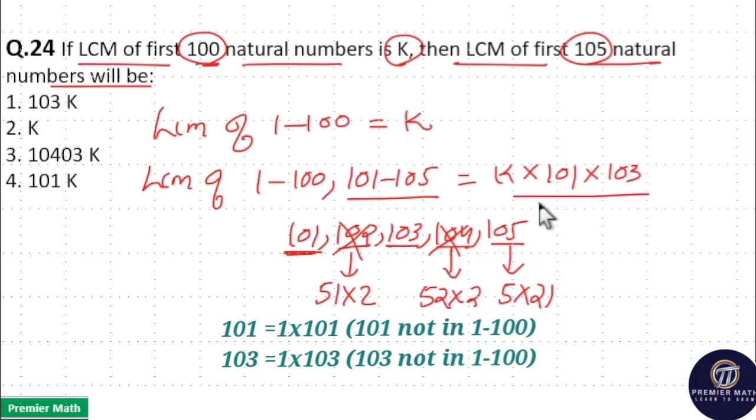So the remaining is K times 101 times 103. If you look at this, 102, 104, and 105 are eliminated. Option 3 is your answer.